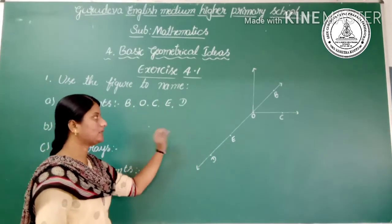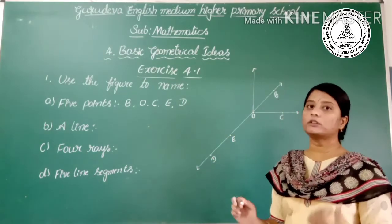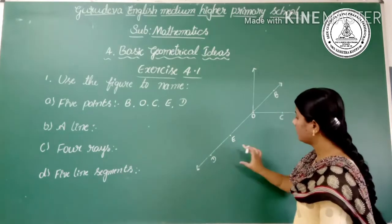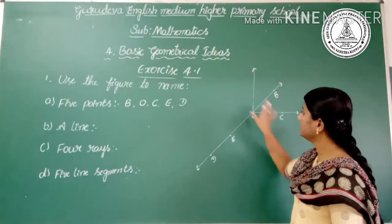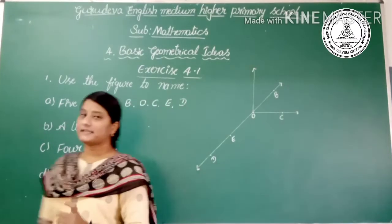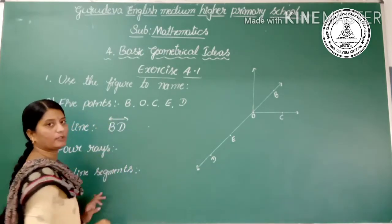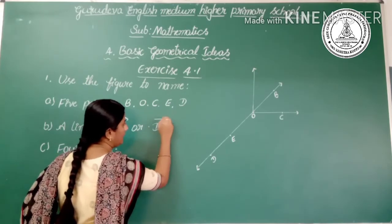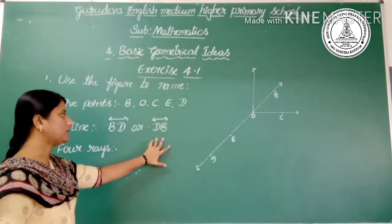The next part is to name a line. We know that a line extends in both directions. So BD is one of the lines — it extends in both directions. We write BD with double arrows above it, which means it is a line extending in both directions.